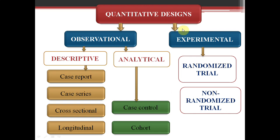All these study designs will be covered in detail in later classes. To summarize: the first division is observational and experimental. In observational study, the researcher has only an observer role — descriptive for creating hypothesis, analytical for testing hypothesis. Descriptive includes case report, case series, cross-sectional, and longitudinal study designs. Analytical includes case-control and cohort studies. Experimental includes randomized and non-randomized trials. This is a broad classification meant to help understand the basics of epidemiological studies. Thank you.